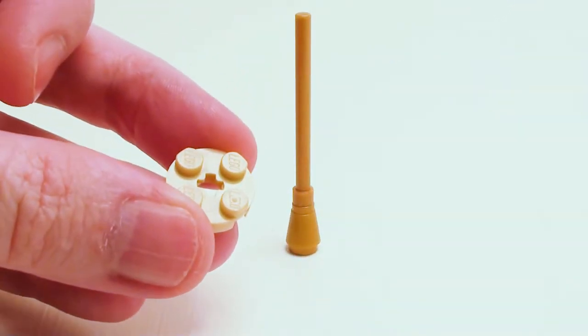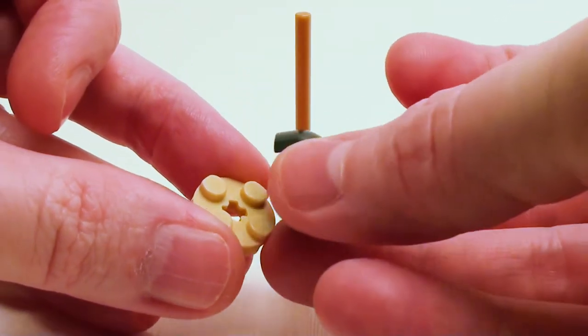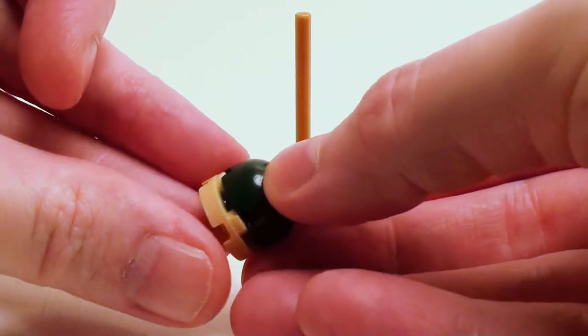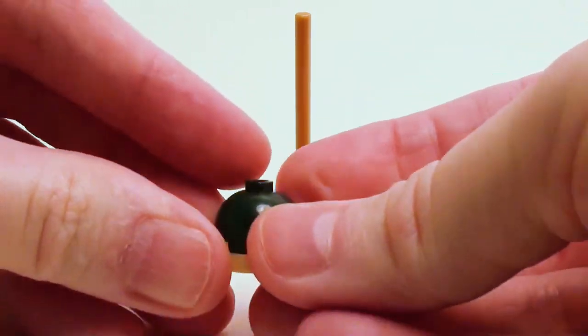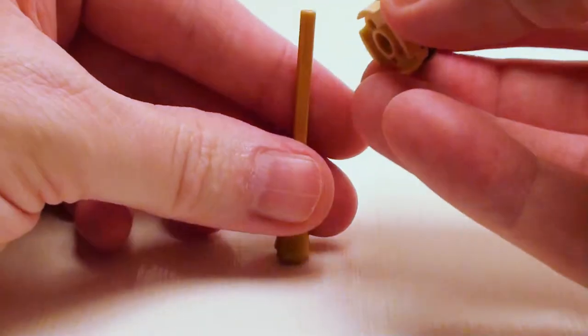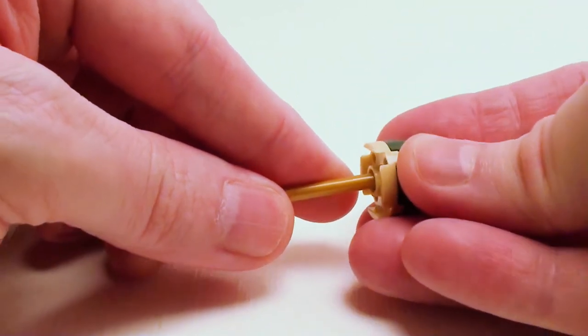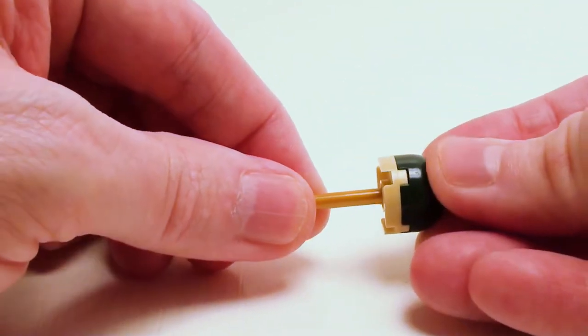For the lampshade, take a 2 by 2 round plate and a 2 by 2 dome brick. Place it on like so. We're going to simply stick this portion of the stick inside the plate and the dome.